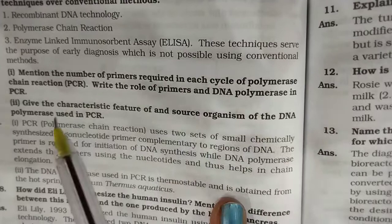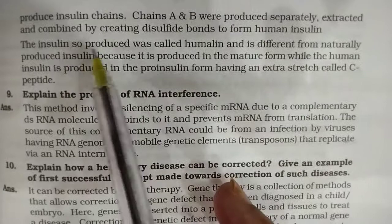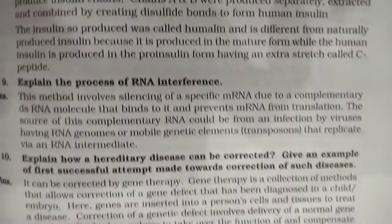Question eight: How did Eli Lilly synthesize human insulin? Mention one difference between this insulin and the one produced by the human pancreas. The answer continues on the next section — you can see it there. Question nine: Explain the process of RNA interference and explain how a hereditary disease can be corrected, giving an example of the first successful attempt made towards correction of such a disease.